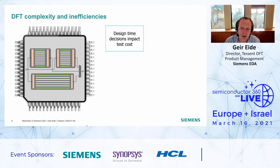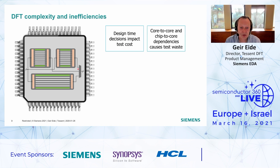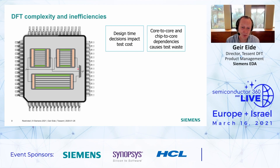Some of the challenges we face are that many decisions impacting test time and test cost have to be made at design time. For instance, deciding which cores you can test in parallel depends on how the mux circuitry is configured — a decision you have to make at design time. And there are lots of dependencies between different cores: two cores tested in parallel should have about the same scan chain length. If we're not good at balancing these dependencies, the result is increased test cost and test waste.